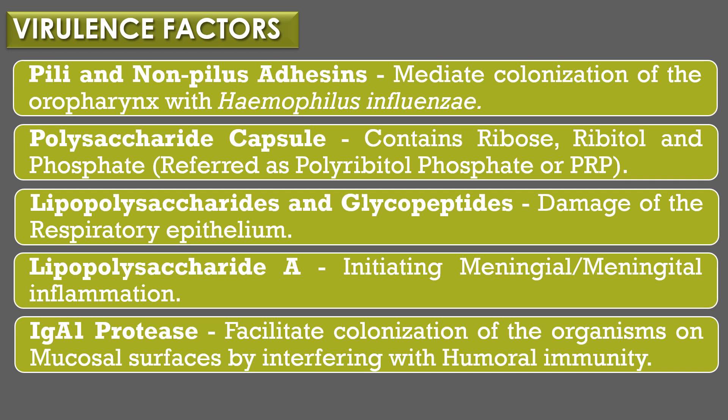The first virulence factor, pili and nonpilus adhesins, mediates the colonization of the oropharynx with Haemophilus influenzae. The second virulence factor, polysaccharide capsule, contains ribose, ribitol, and phosphate, commonly referred to as polyribitol phosphate or PRP. The third, lipopolysaccharides and glycopeptides, damage the respiratory epithelium. The fourth, lipooligosaccharide A, initiates meningeal inflammation. The fifth, IgA1 protease, facilitates colonization on mucosal surfaces by interfering with humoral immunity.